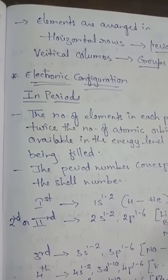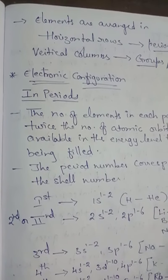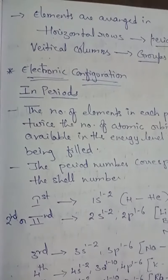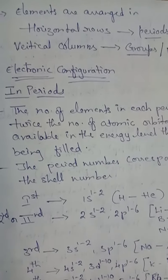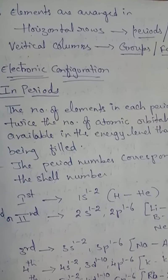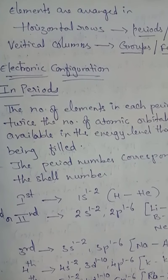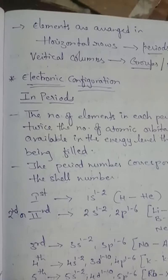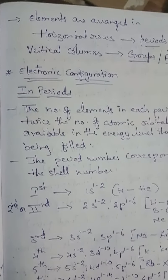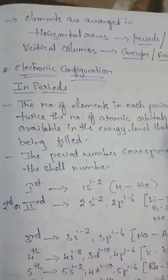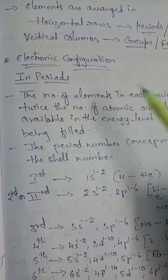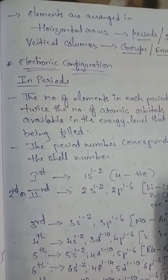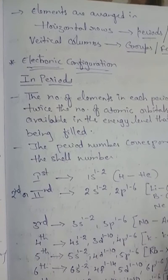Hello students. In today's class we are going to learn about electronic configuration. The distribution of electrons into orbitals of an atom is called its electronic configuration. We are going to deal with how the electronic configuration is present in periods and in groups, each and everything in a detailed manner.